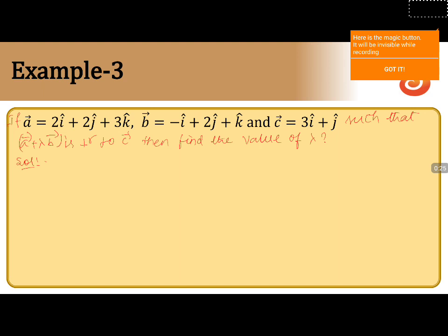We have to remember that whenever two vectors are perpendicular, their dot product is equal to 0. Now we are going to use that result.